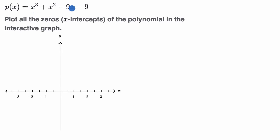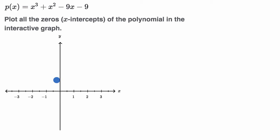We're told that p(x) is equal to this expression, and it says to plot all the zeros, or x-intercepts, of the polynomial in the interactive graph. This is a screenshot from an exercise on Khan Academy, where you'd be able to click on points and place or delete dots. So the main goal is to find the zeros of this polynomial and plot them on the graph. Pause this video and have a go at it.